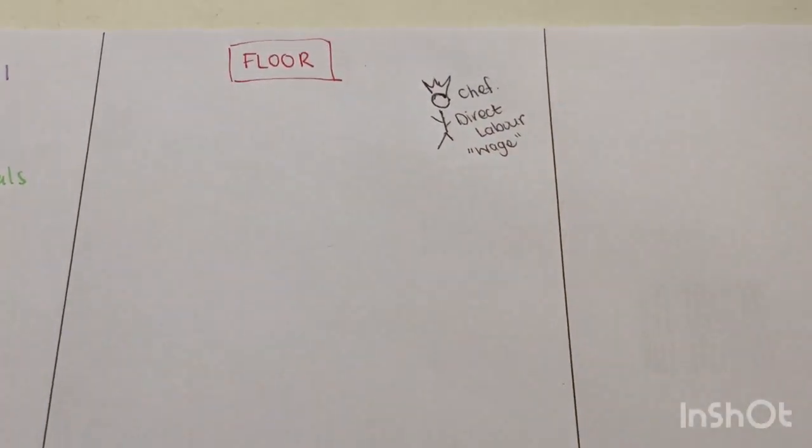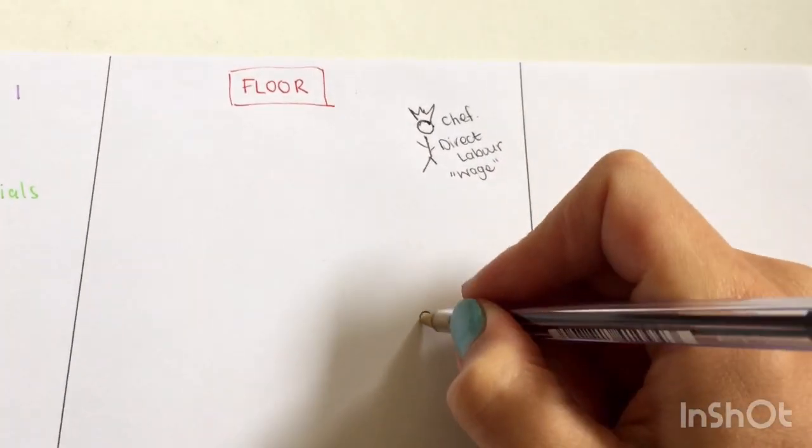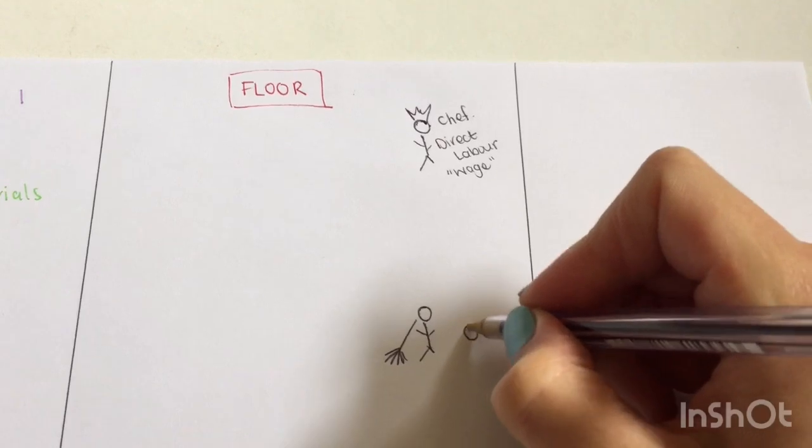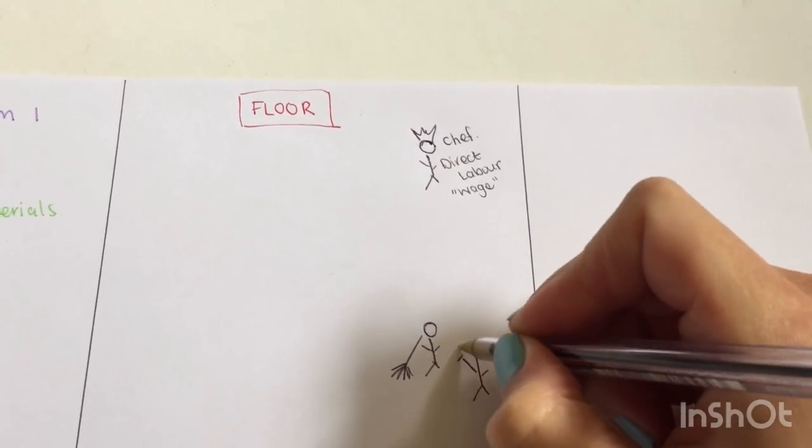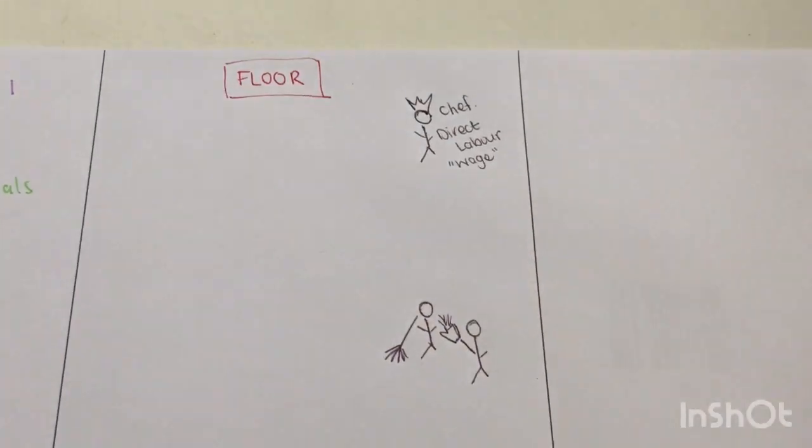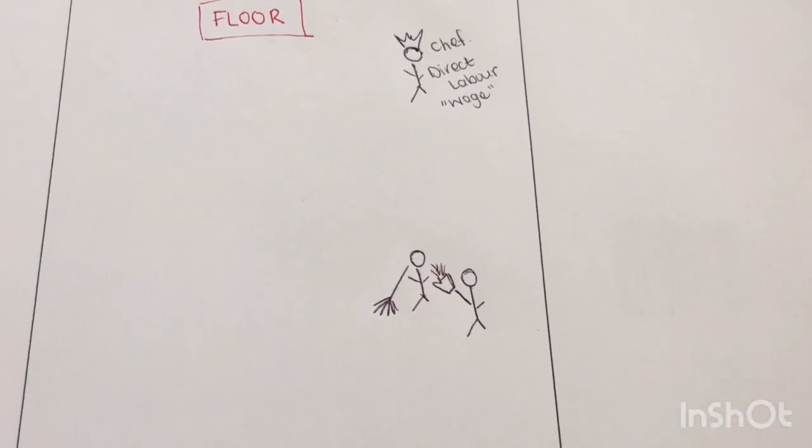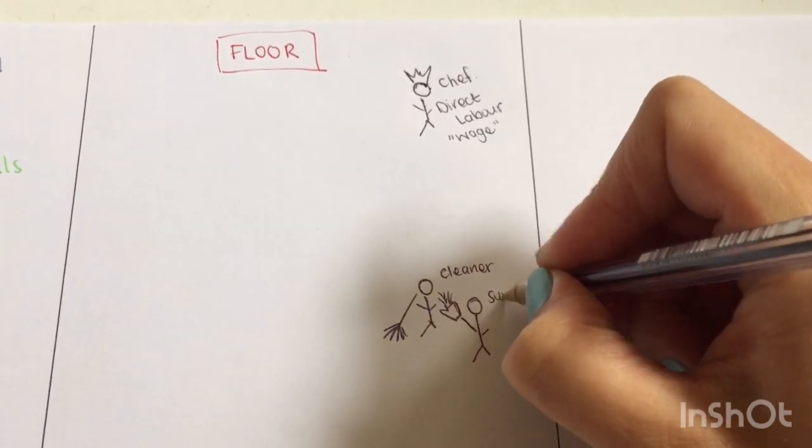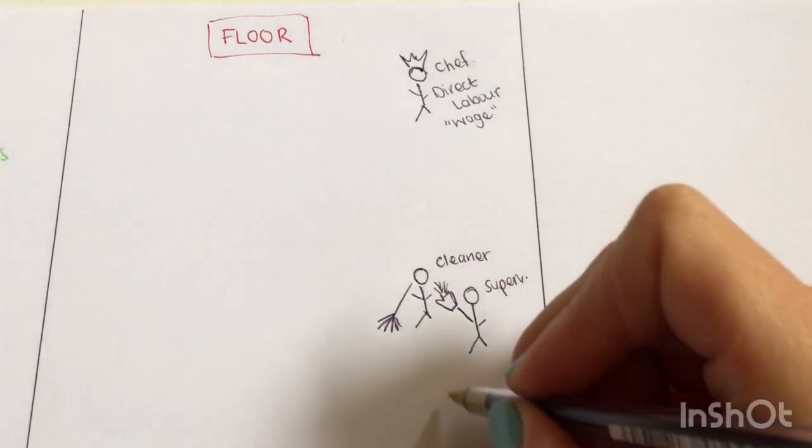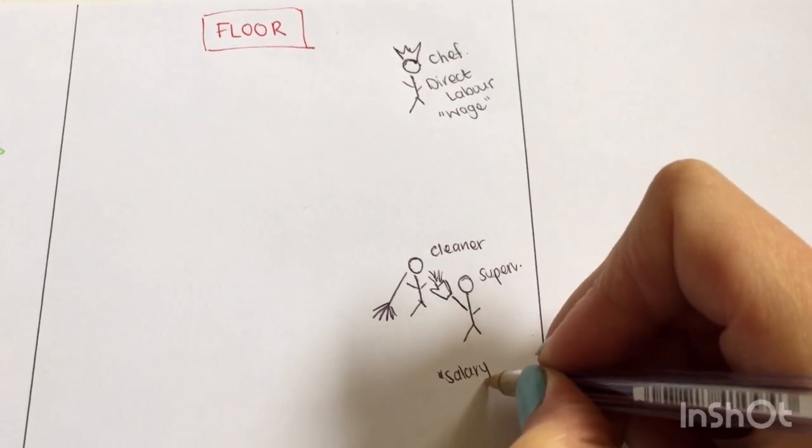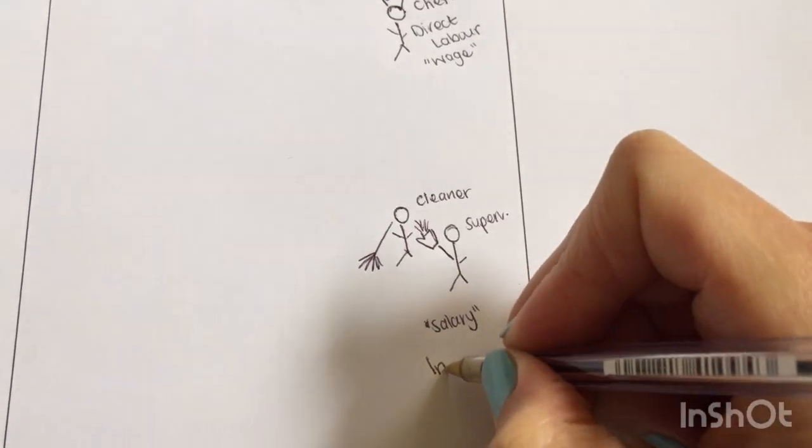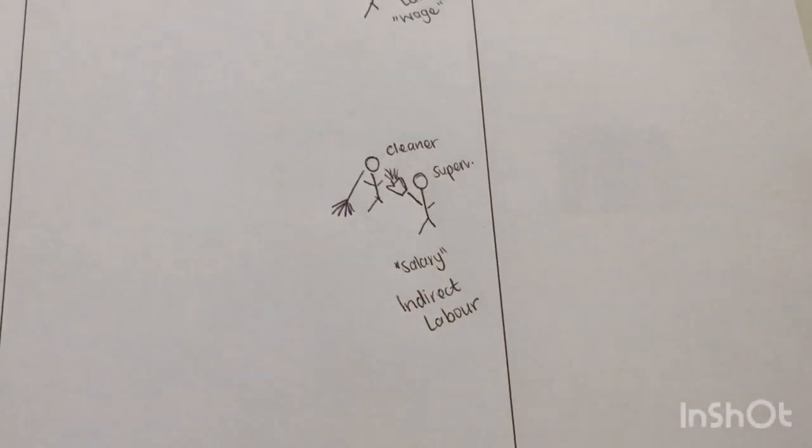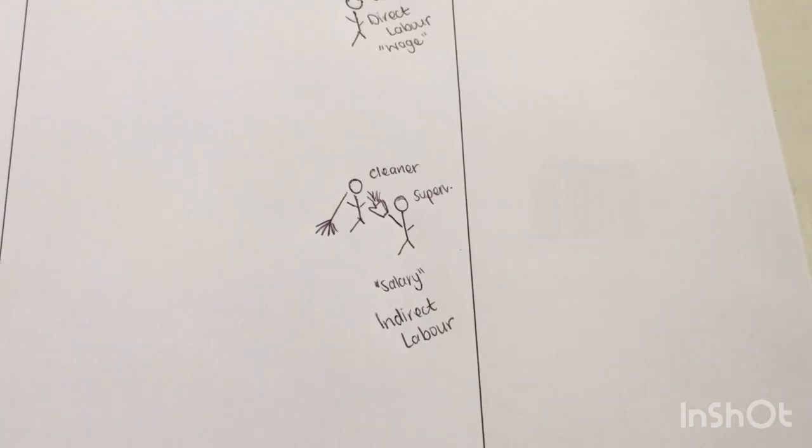I will also have someone who's going to clean, and you're going to have a supervisor as well. The cleaner and the manager or the supervisor will be paid normally—we're going to refer to them as they get a salary—and that is the indirect labor. Similarly, if we contribute towards UIF for them, that will be added to the indirect labor cost.